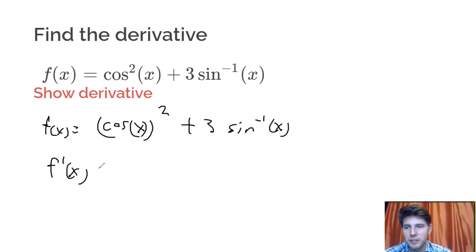The derivative of this. The 2 gets brought down in front, and we leave the cosine alone. This is chain rule. So then we multiply the derivative of the inside of this, which is negative sine x. Plus,